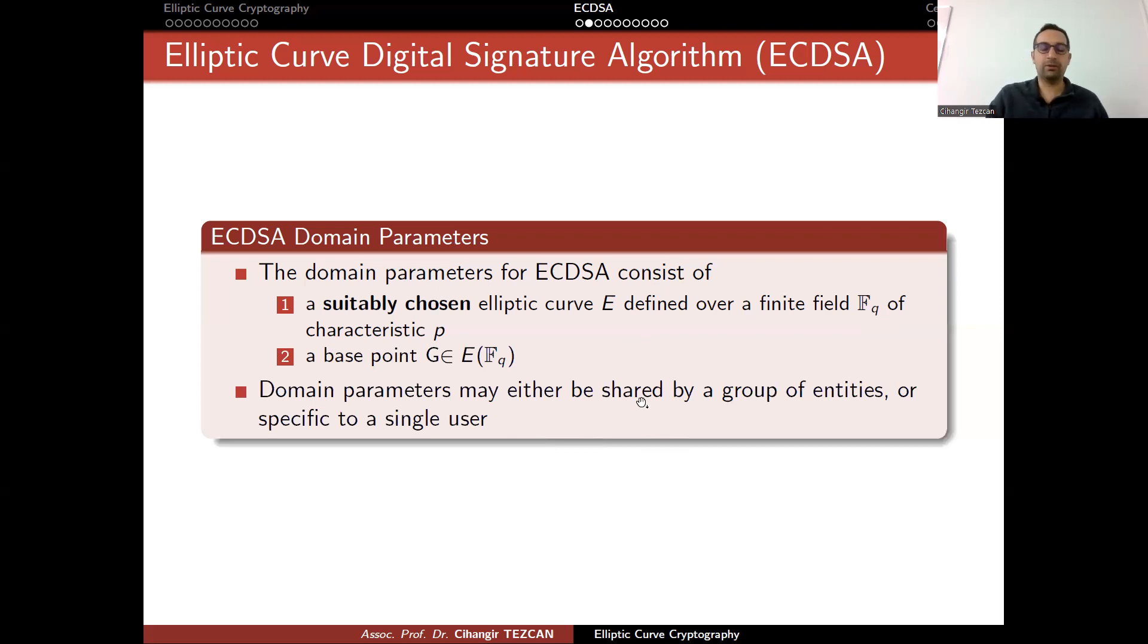Domain parameters may either be shared by a group of entities or specific to a single user. Let's go back to Bitcoin and Ethereum. Here I showed you the domain parameters. It was valid for everybody. Everybody is using the same domain parameters. They choose different points on the curve so that they can choose their private keys and public keys. You can either choose a new curve to communicate with somebody else, but you can first define these parameters and everybody can use them.